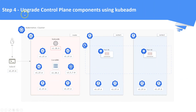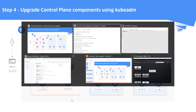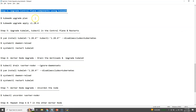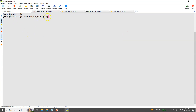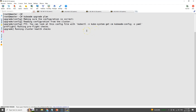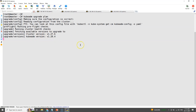Step number four: upgrade control plane components using kubeadm. Now upgrade the control plane components like API server, controller, scheduler, proxy, etc. The kubelet agent will not be upgraded here as it is a service daemon — we need to upgrade it separately in all the nodes. Let us check the upgrade plan using the kubeadm tool. We can see that the cluster is in the old version 1.27, and the kubeadm binary is already upgraded to 1.28 in the previous step.